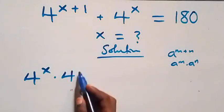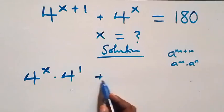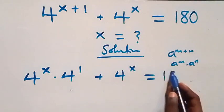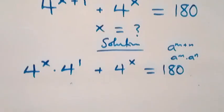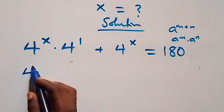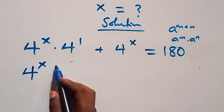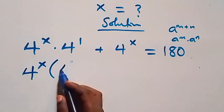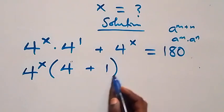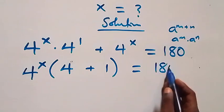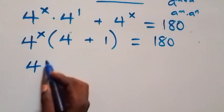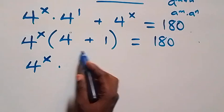We have four raised to power x times four raised to power one, then plus four raised to power x, equals 180 on this side. From here, four raised to power x is common and we factor it out. That is four raised to power x, into bracket four raised to power one — that is 4 — plus one, equals 180. This becomes four raised to power x times five.